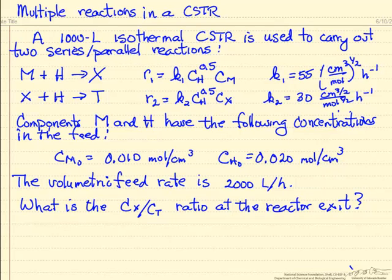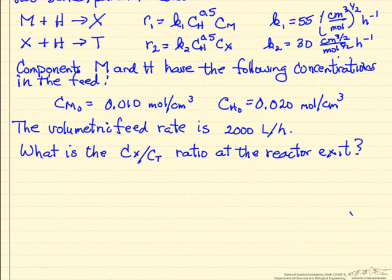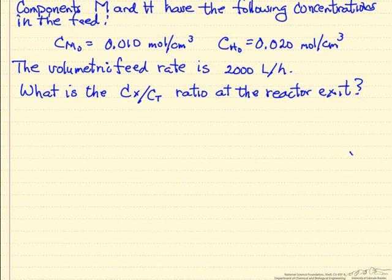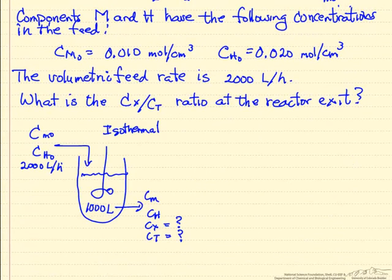To do this we're going to solve mass balances. The first thing we're going to do is draw a diagram to represent the behavior. We have a steady state reactor, we're feeding M and H at a certain volumetric feed rate, 2000 liters per hour, and then we have all four components leaving. We want to know the concentration of X divided by the concentration of T.